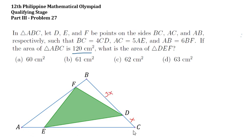AC is 5 times AE, so if AE is y, AC must be 5y and EC must be 4y. Now, AB is 6 times BF, so if BF is z, AB must be 6z and AF must be 5z.